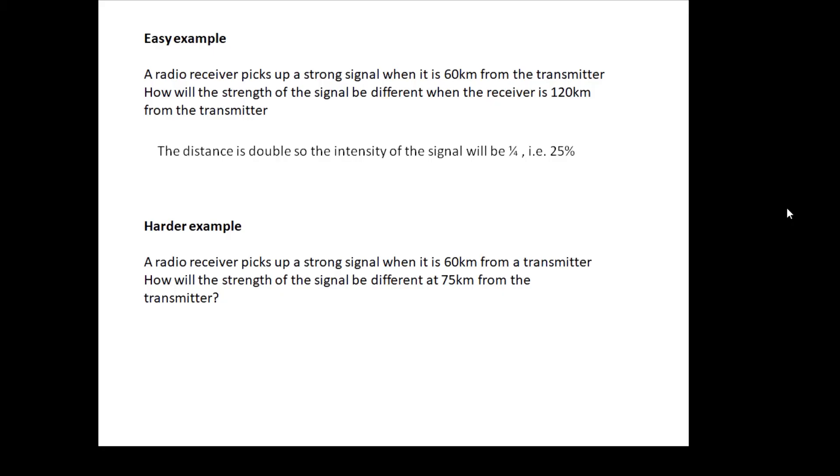Harder example: a radio receiver picks up a strong signal when it's 60 kilometers. What will the strength be at 75 kilometers? To do this we need to work out the value of k. First, k = I × r². At 60 kilometers it's 100 percent, giving k = 360,000. Then at 75 kilometers, it's 360,000 divided by 75 squared, which is 64 percent.